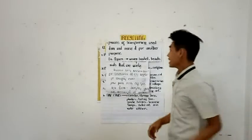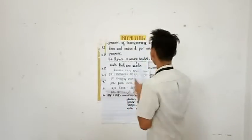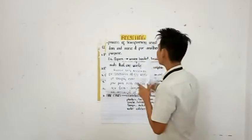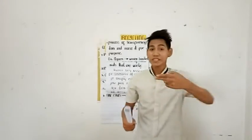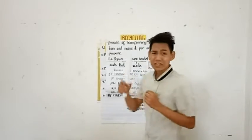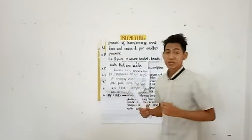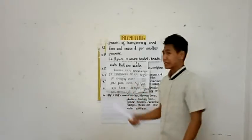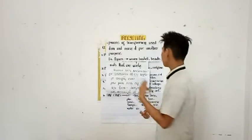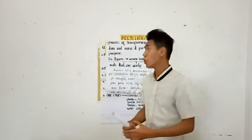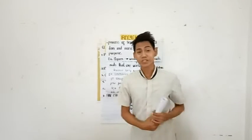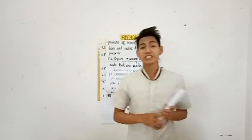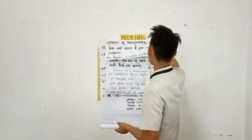Recycling is the process of transforming used items and reusing them for another purpose — from the word itself, re-use, recycling. One of the best examples of recycled materials is paper. Paper could be made into paper woven baskets, paper beads, and many more. In recycling, we have two types: internal recycling and external recycling.